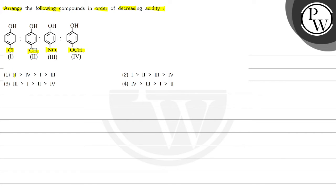The options are given. Option 1: II > IV > I > III. Option 2: I > II > III > IV. Option 3: III > I > II > IV. And the fourth option is IV > III > I > II.